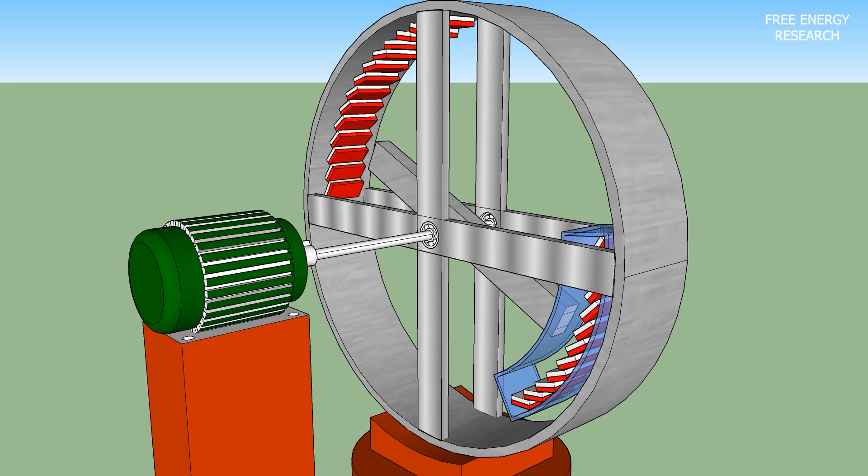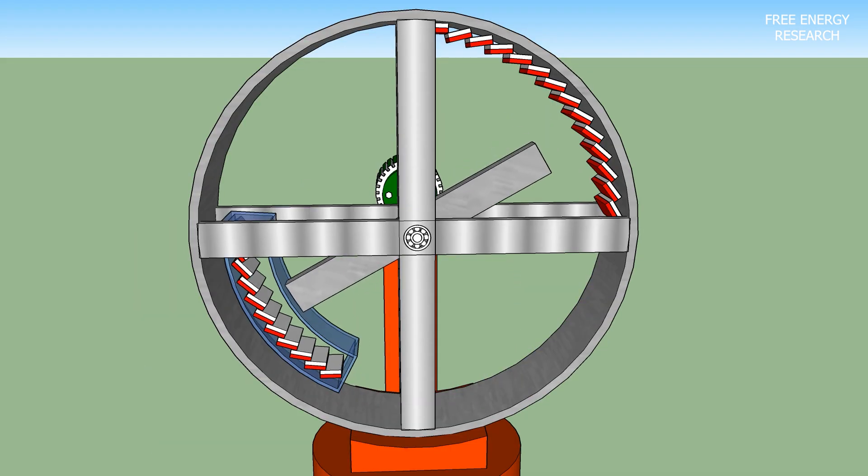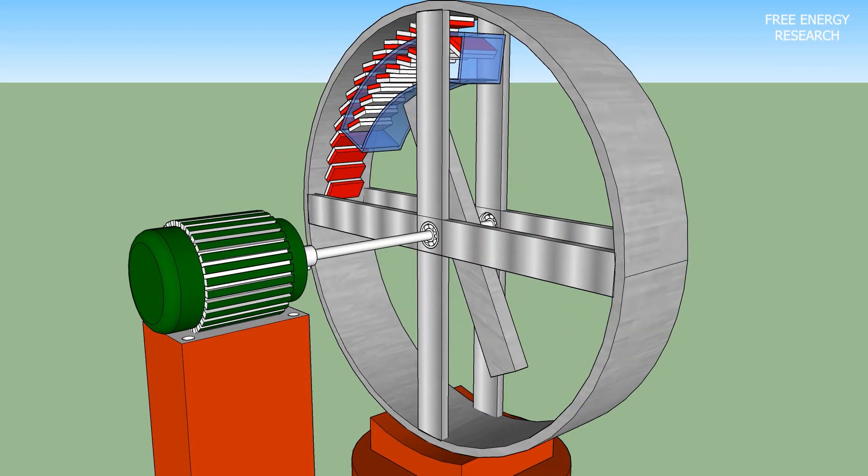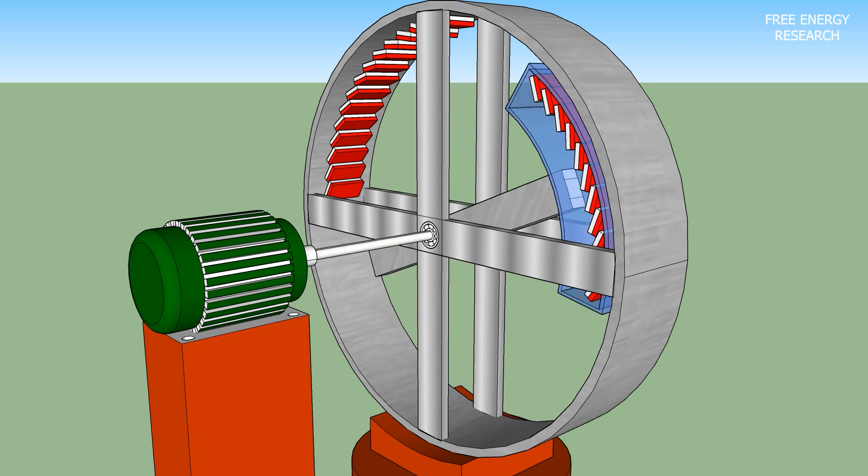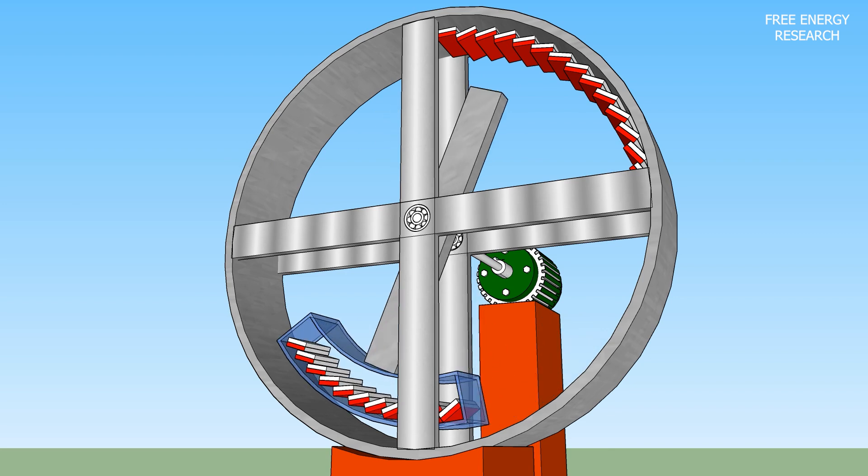Key Components. Imagine a device with a solid base providing stability, housing a generator with a rotating shaft. Connected to this is a circular frame, encircling an inner perimeter. Magnets strategically placed on this frame play a crucial role in the device's operation.